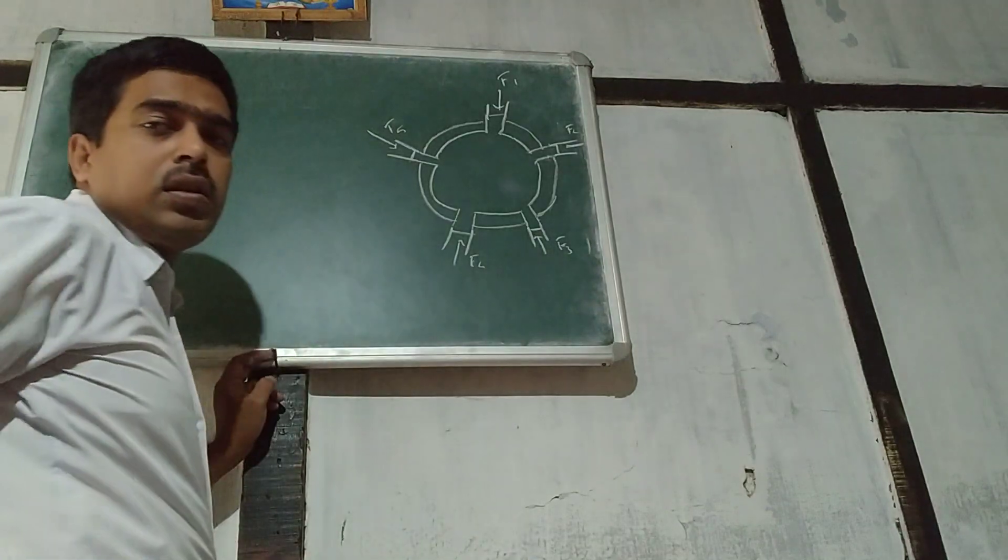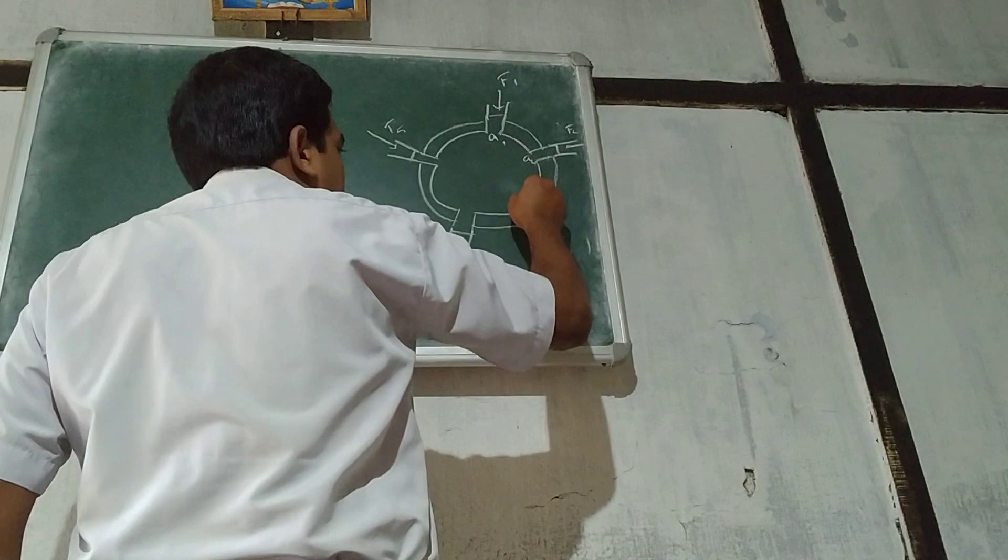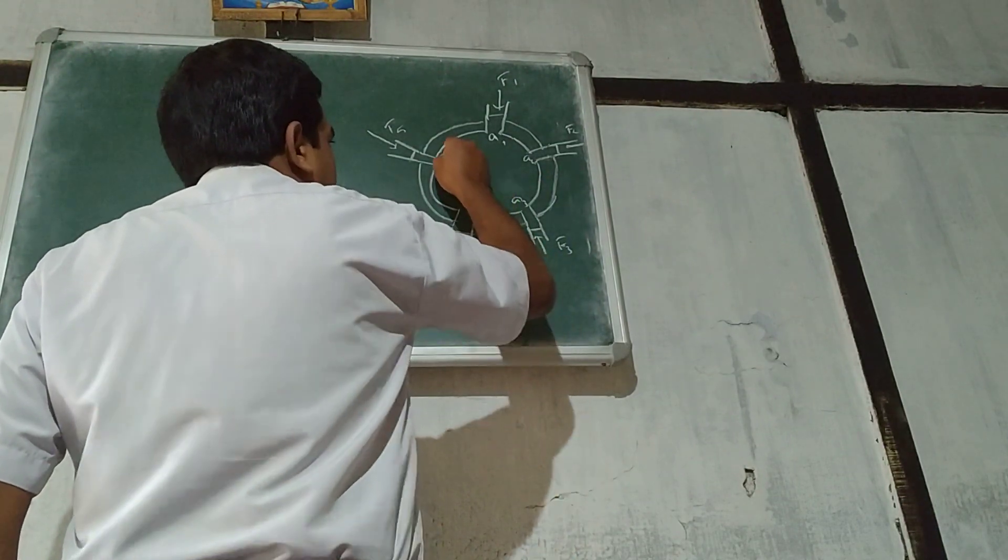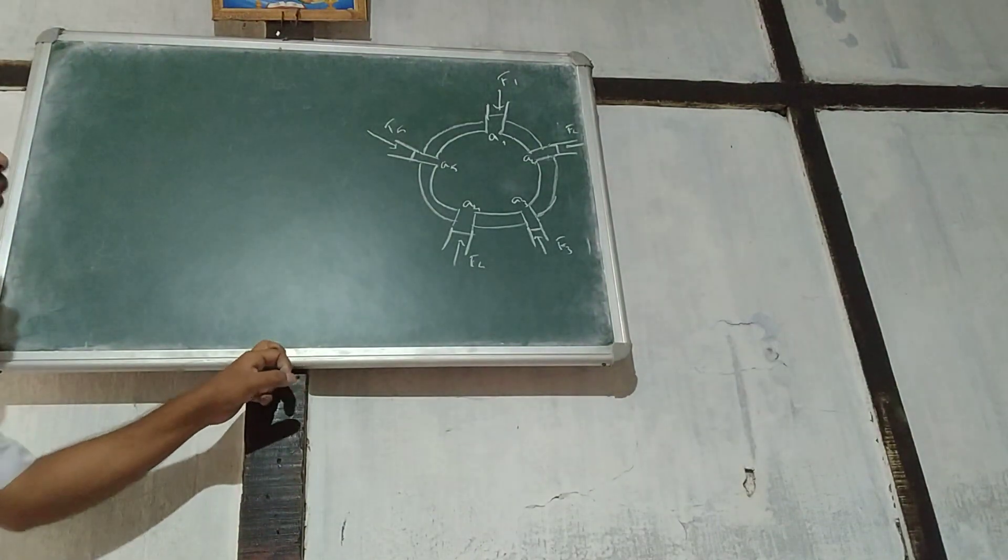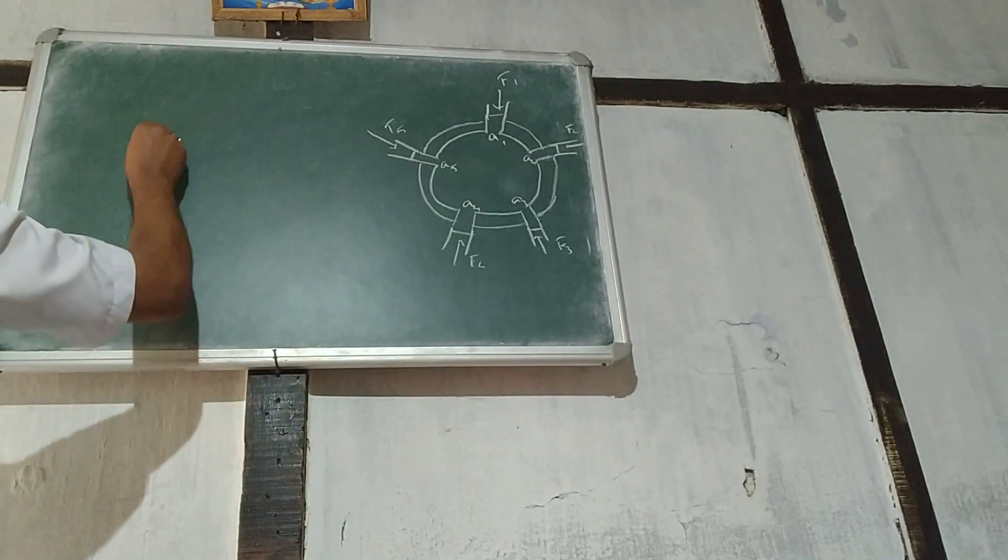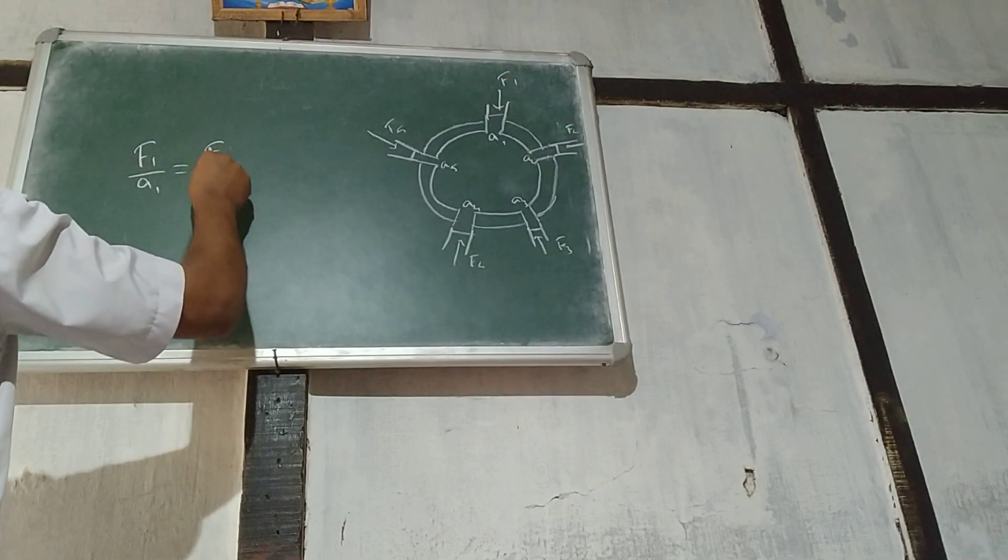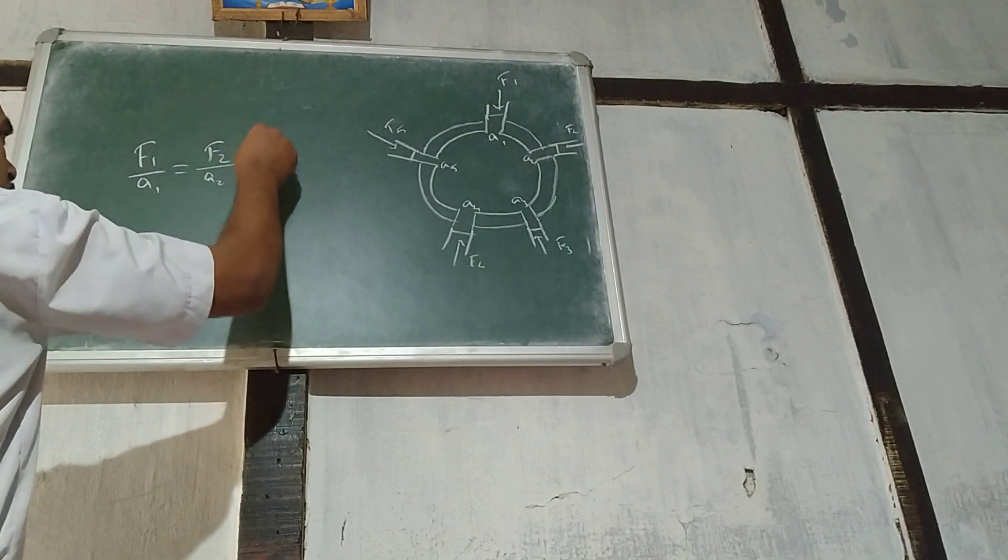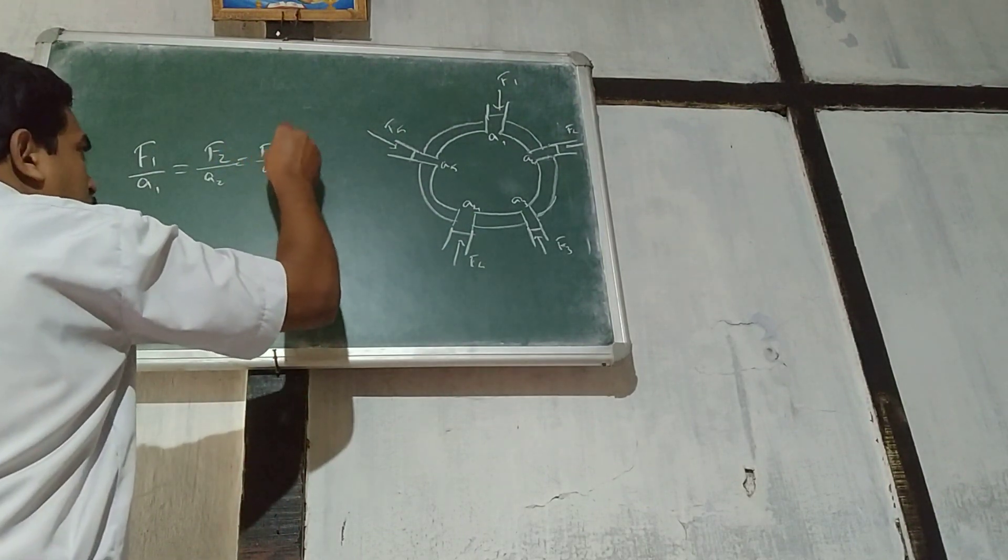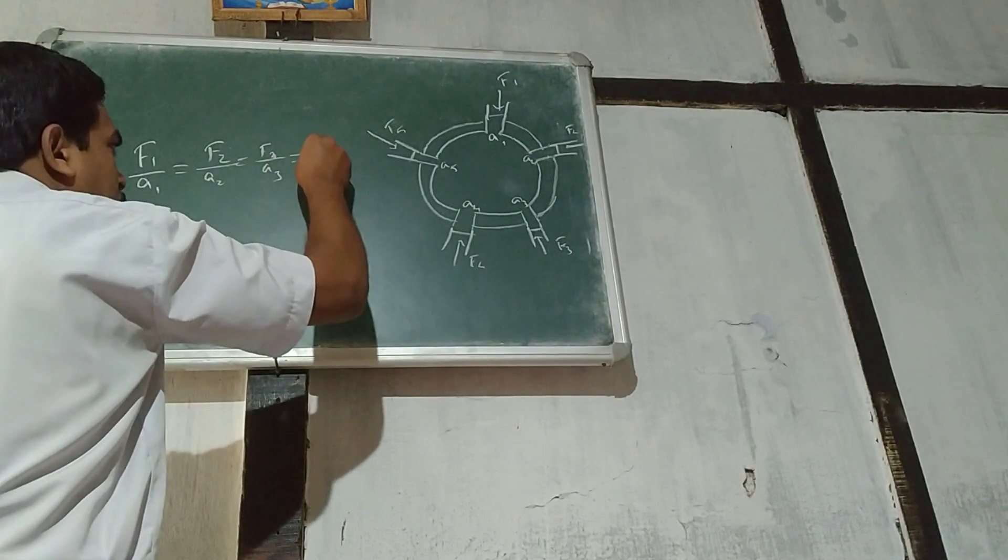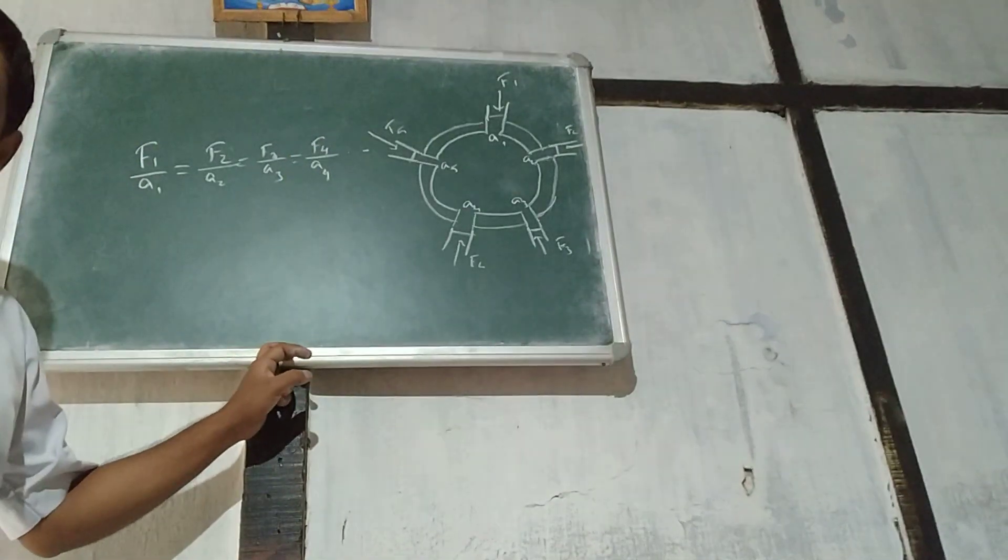Area of each section will be defined: A1, A2, A3, A4, A5. Pressure equals force by area. So all the pressure values will be equal according to Pascal's law: F1/A1 equals F2/A2 equals F3/A3 equals F4/A4 and so on. This is Pascal's law.